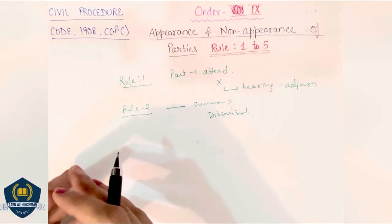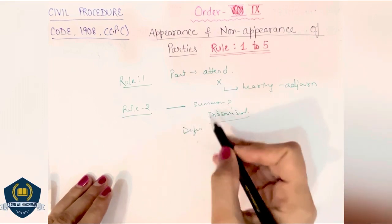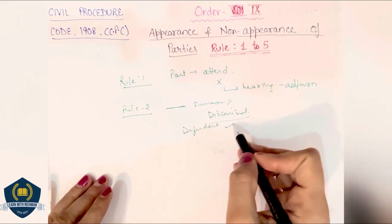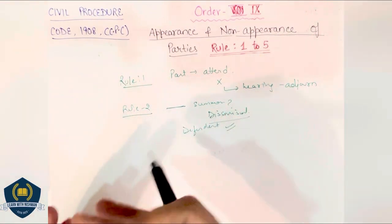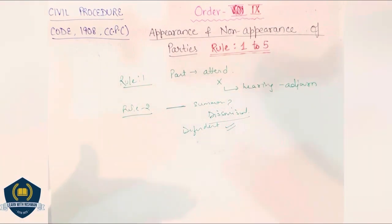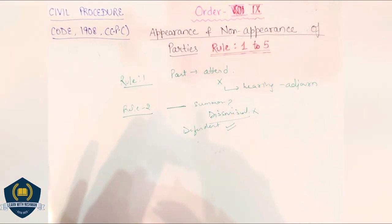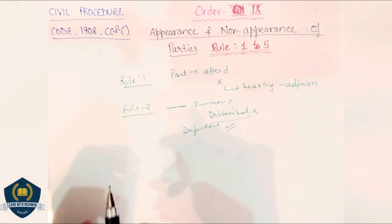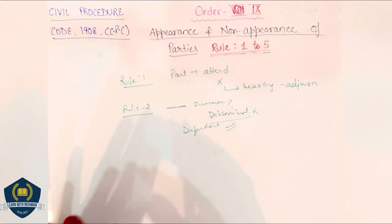But if dismissal होने के बावजूद जो defendant है, although उसको समन नहीं पहुँचे हैं, still वो defendant present हो जाता है, court में आ जाता है। तब court क्या करेगी? If defendant appears in the court, then court will not dismiss the suit and it will pass the order. जो यह order आएगा, यह बाद में appealable नहीं है, but you can only apply for revision under Order 115.